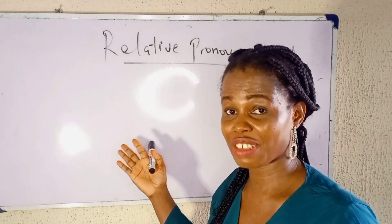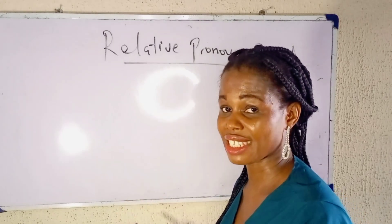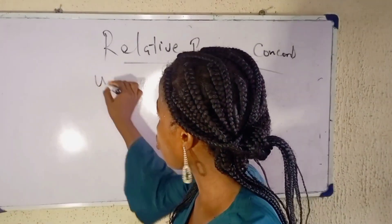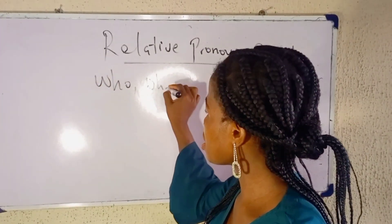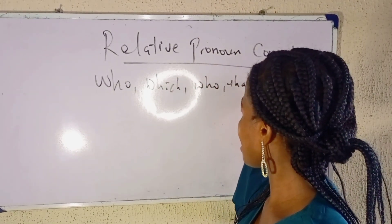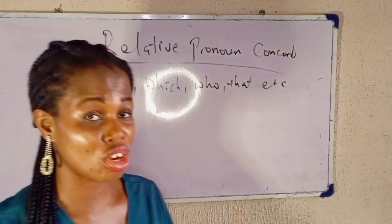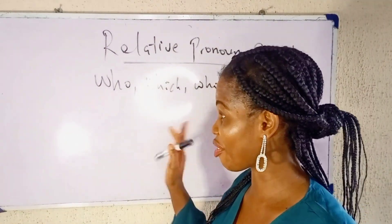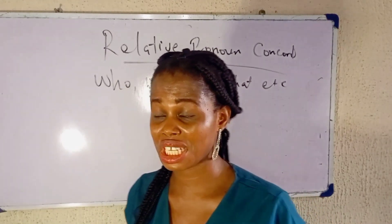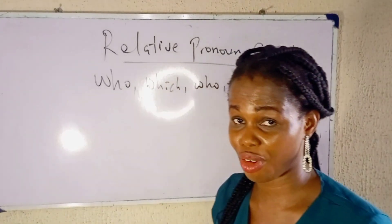First, a Relative Pronoun is a pronoun that tells us more about a noun. They are used in traditional Relative Clauses. They tell us more about a noun. They include: who, which, whose, that, etc. I'm treating this topic because I see a lot of questions on it in past questions, so I need you to pay attention because it's very simple.